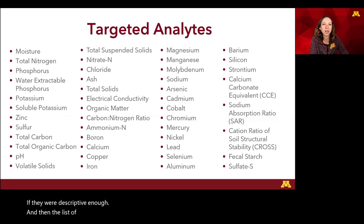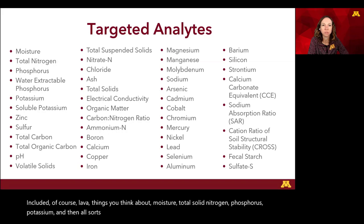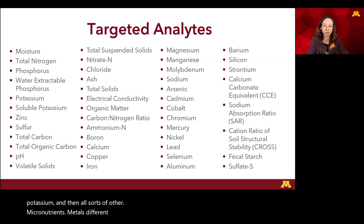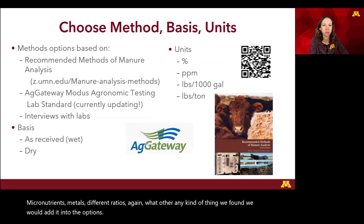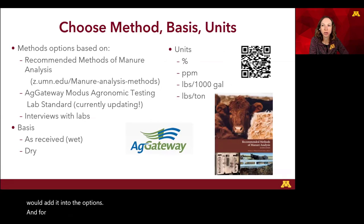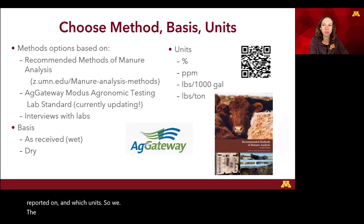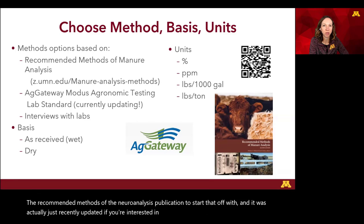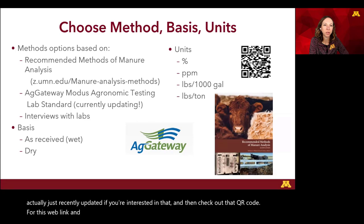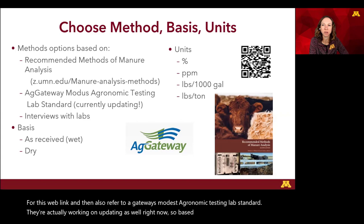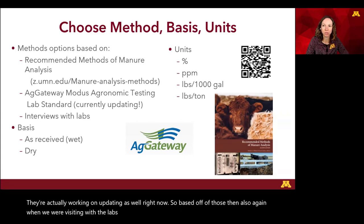The list of analytes includes moisture, total solids, nitrogen, phosphorus, potassium, and all sorts of other micronutrients, metals, and different ratios. Any kind of analyte we found, we would add it to the options. For each analyte, we have to select which analytical method was used, which basis it's reported on, and which units. We used the recommended methods from a near-infrared analysis publication to start — which was recently updated — and also referred to the Gateways MODIS agronomic testing lab standard, which is currently being updated as well. When visiting with labs, we also want to know if data are on a wet or dry basis and what type of units are being reported.